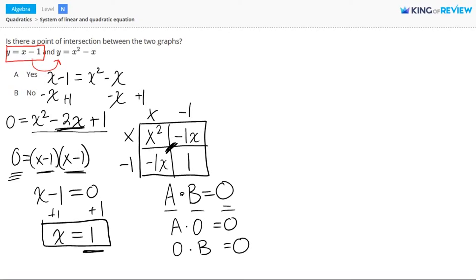Now what does this x equals 1 represent? This represents the x coordinate of the point of intersection. If we wanted to solve for the y coordinate of the point of intersection, we could plug this x value into either one of these two equations and solve for y.